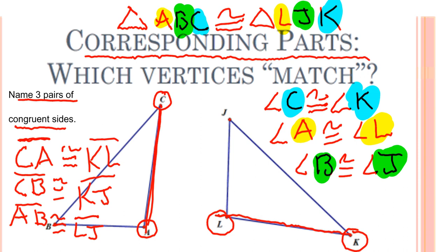So now, when I want something like CA, notice C and A are the first and last. And K and L are the first and last. And so KL down here go together. Okay, that's a little trick you can use when you're given something like this triangle congruence statement. You can use that to your advantage in answering these types of questions.